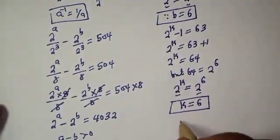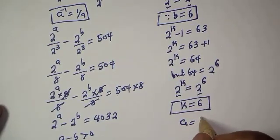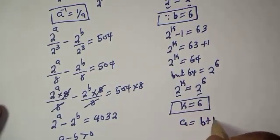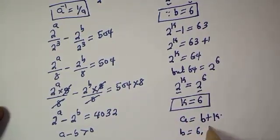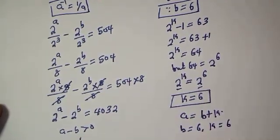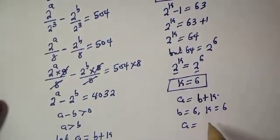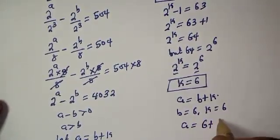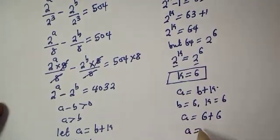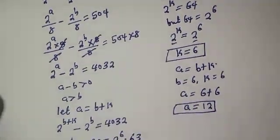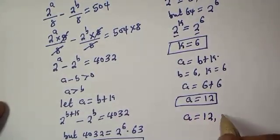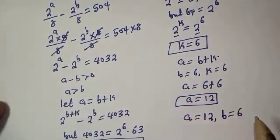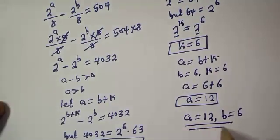Recall that a equals b plus k. We know that b equals 6 and k equals 6, so a equals 6 plus 6, which gives a equals 12. Therefore, our final answers are a equals 12 and b equals 6.